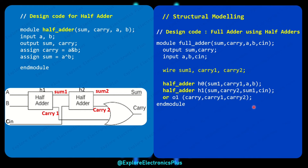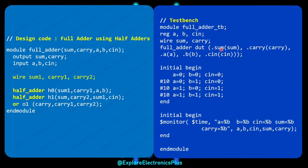Let's simulate this to understand how the code works. For that we require a test bench to provide input values to our design. The test bench is the top module and contains the full adder module inside. In the test bench, the full adder instance is connected — all registers and wires of the test bench are mapped to the full adder ports using dot notation: dot sum connects to the wire sum, and dot carry connects to the wire carry.